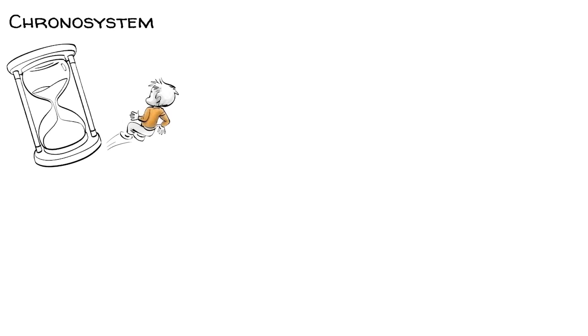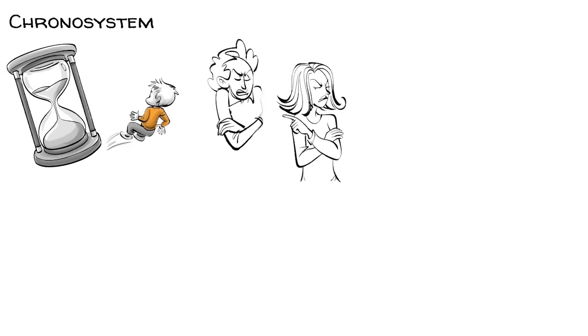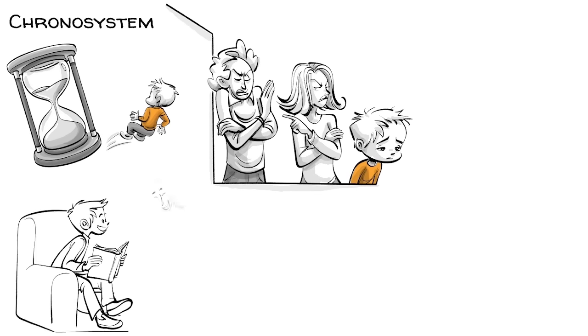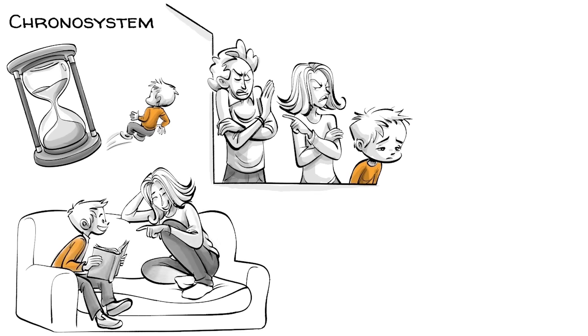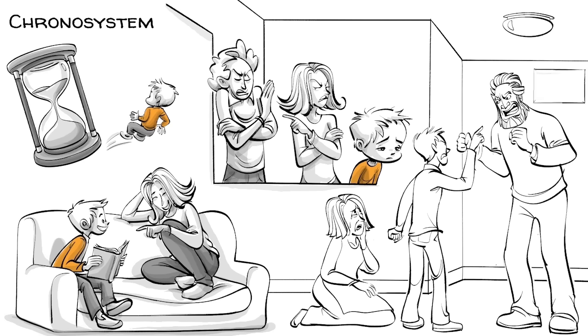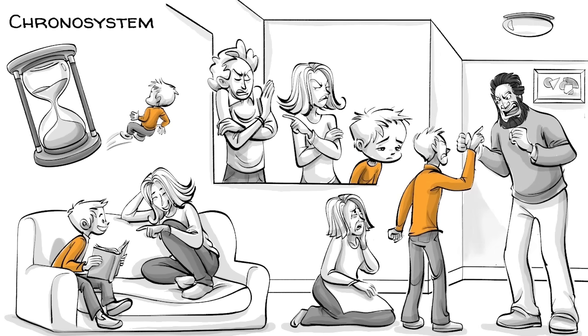The chronosystem refers to changes in the child and the environment over time. As the child grows up, the parents may stop loving each other and divorce, which can be traumatic for an eight-year-old boy. Five years later, he may have come to terms with how things turned out. But when the boy turns 16, his mom's new boyfriend moves into their tiny apartment and things get difficult again.